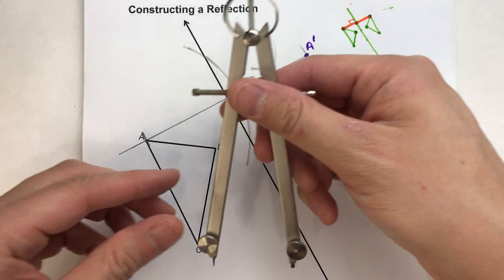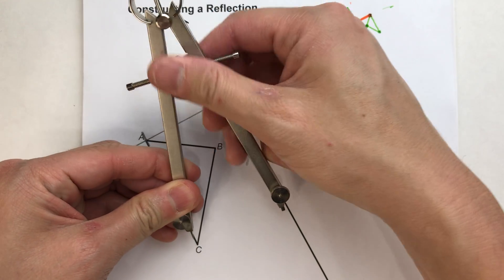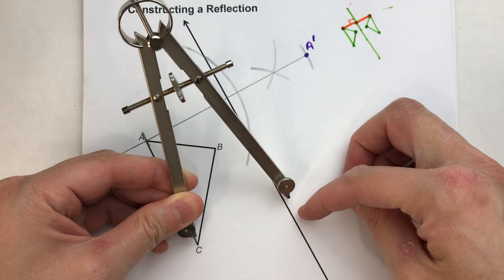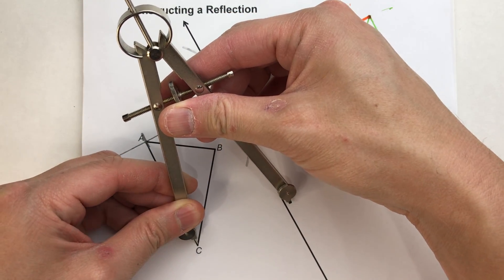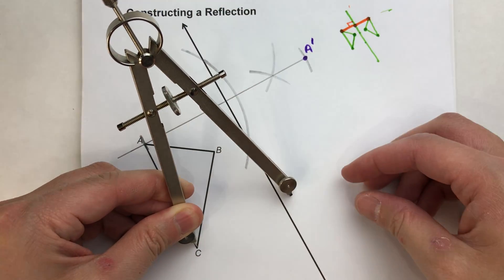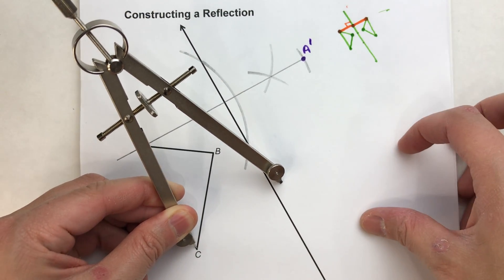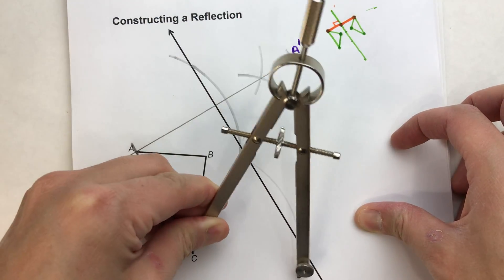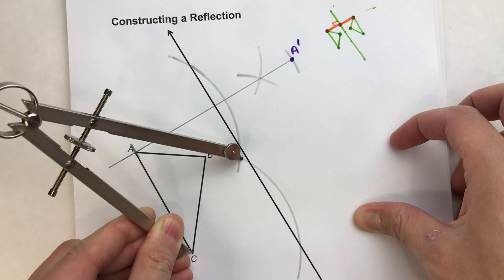I'm going to do point C. I'm going to adjust my compass so that it crosses the line of reflection. And I want it to hit, just like before, hit it in two places. So here we go. I hit it in two places.